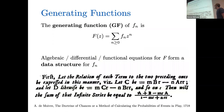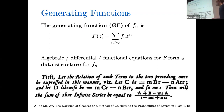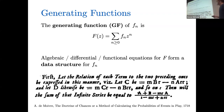One nice thing about generating functions is that you can often encode interesting sequences using algebraic, differential, or functional equations that their generating functions satisfy. This observation goes back a long time. Here's a scan of de Moivre's 'Doctrine of Chances' from 1718, where he basically says a sequence is related by what we would now call a linear recurrence of order two — relating C to B and A, and D to C and B. He shows that you get a rational generating function from this linear recurrence.